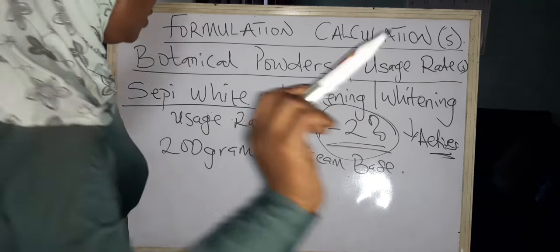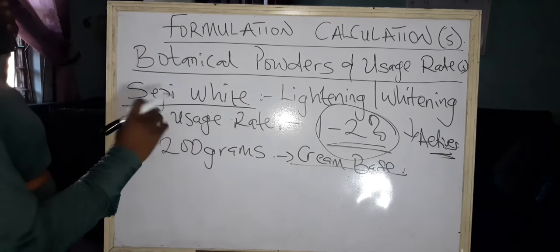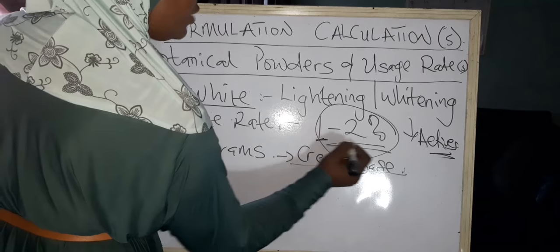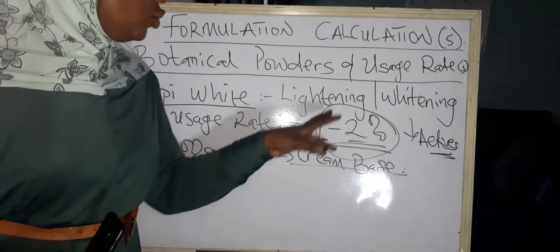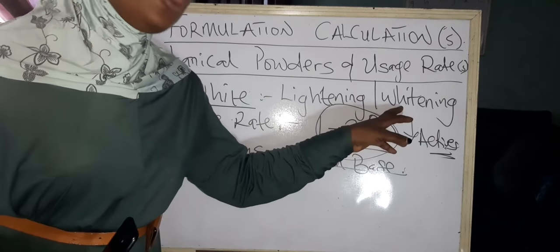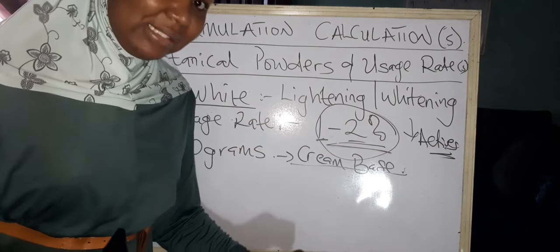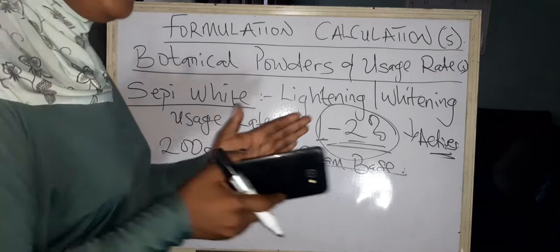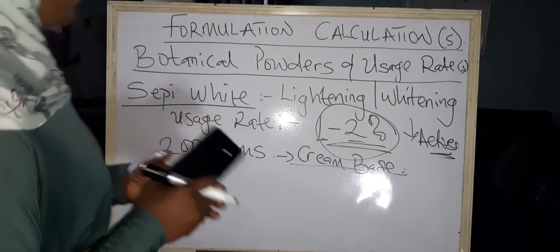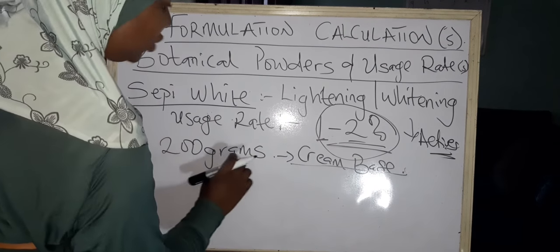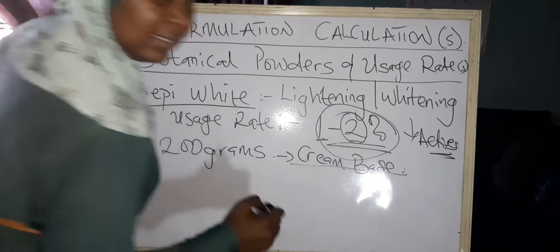Now let's go straight up. 200 grams of base cream is what you want to use Sepi White in. The percentage rate is one to two. When you put Sepi White at one percent, you'll have a lightening effect. When you put it at two percent, you have the possibility of having a whitening effect, especially when you combine it with another active. Make sure the actives you're combining have similar pH so they can coexist. 200 grams of base cream, we intend to put Sepi White at two percent.